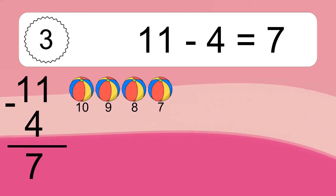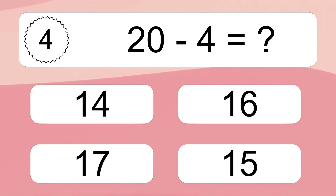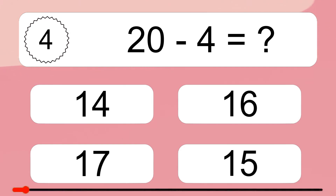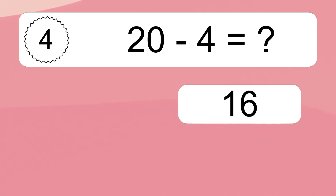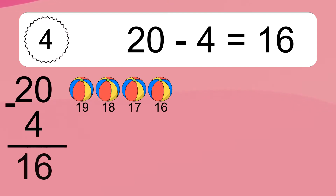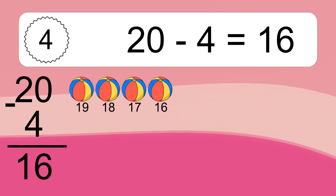7. 20 minus 4 equals what? 20 minus 4 equals 16. Let's count it: 19, 18, 17, 16.